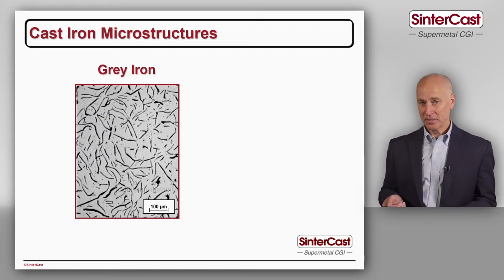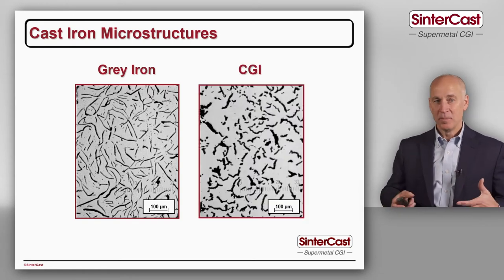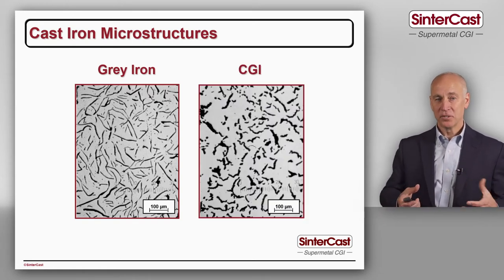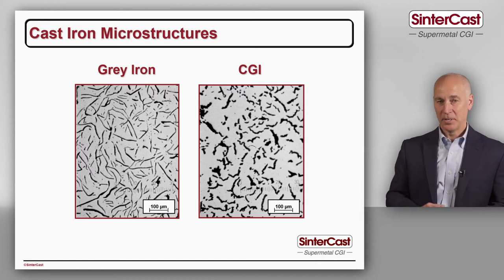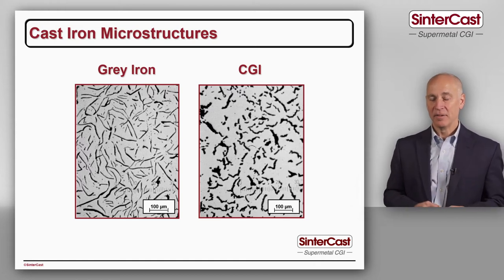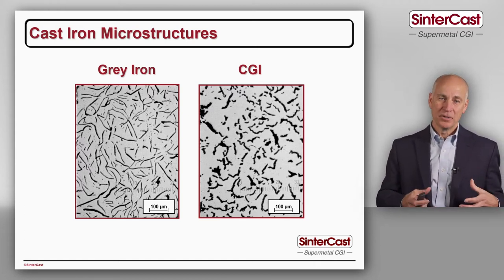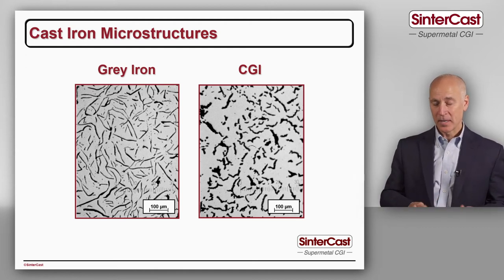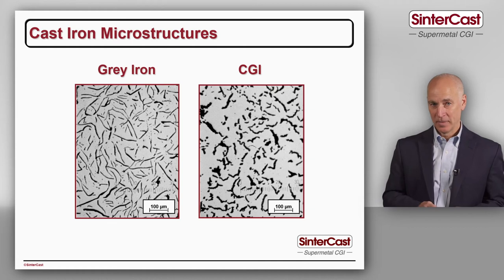In compacted graphite iron we want to keep all of these advantages of the graphite, so we still want elongated and randomly oriented graphite. But we want to make each of the graphite particles shorter and thicker, and most importantly to have a rounded edge.